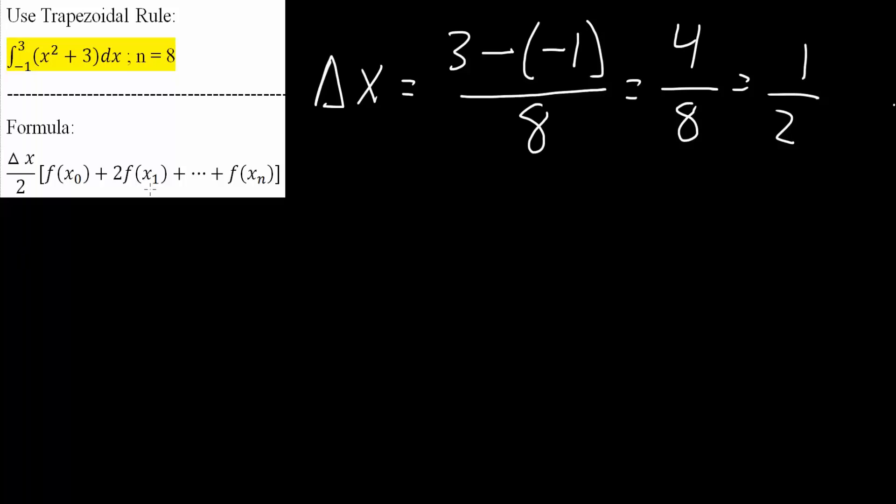And now, we will use this formula to ultimately solve this integral. But the one thing we can do is apply this 1 half. So, our starting is x naught, which is negative 1, right? And it increases by 1 half. So, our x1 would be negative 1 half, and our x2 would be 0.